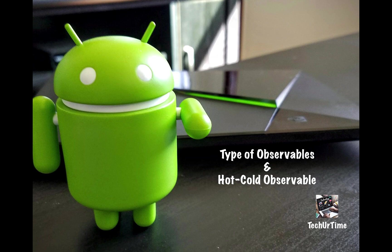Hi, this is Soumayjit Das. Welcome. This is the second video of the playlist I am making on learning reactive programming in Android. In this video, we are going to discuss types of observables on the basis of their data properties, and we'll also discuss hot and cold observables.